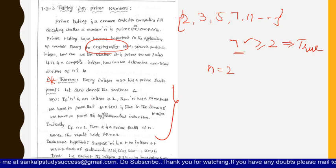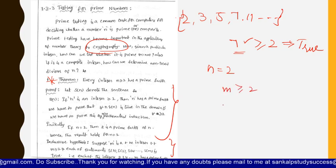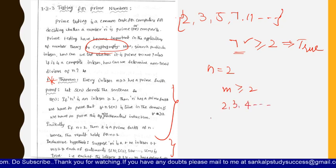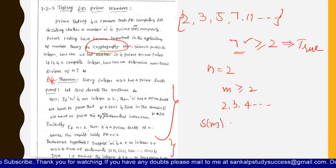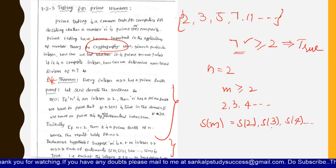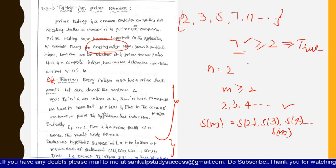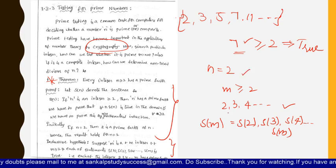Coming to the inductive hypothesis — step 2 — suppose m is a positive integer such that m is greater than or equal to 2, meaning 2, 3, 4, and so on. All these integers are included. So s(n) becomes s(2), s(3), s(4), and so on up to s(n). That means 2, 3, 4 — all these integers will have prime factors, because when n equals 2, 2 is a prime factor, and any number greater than or equal to 2 will also have a prime factor.